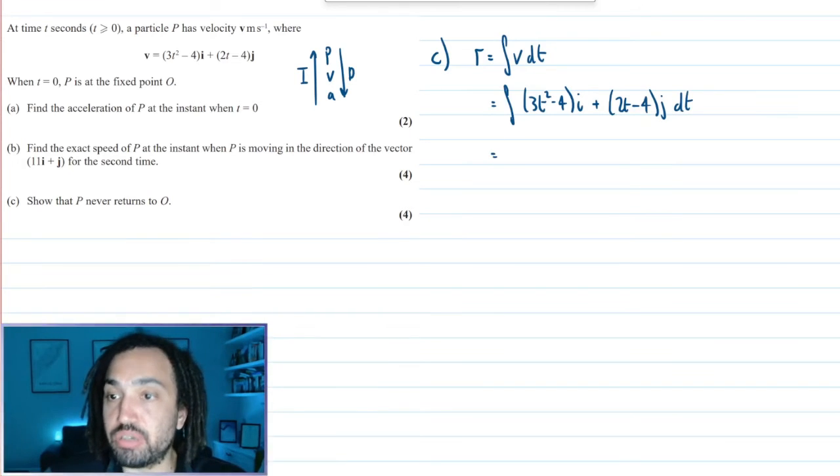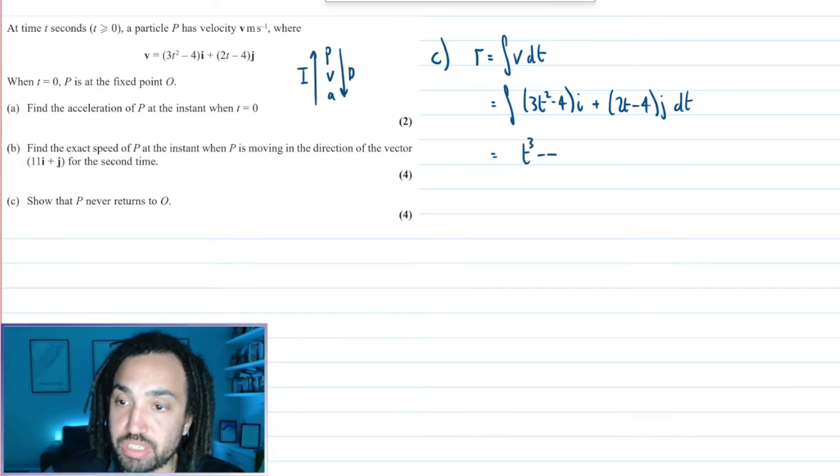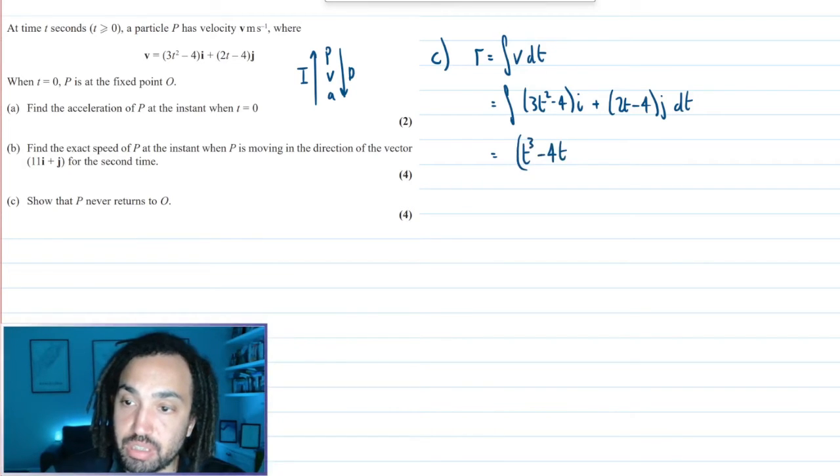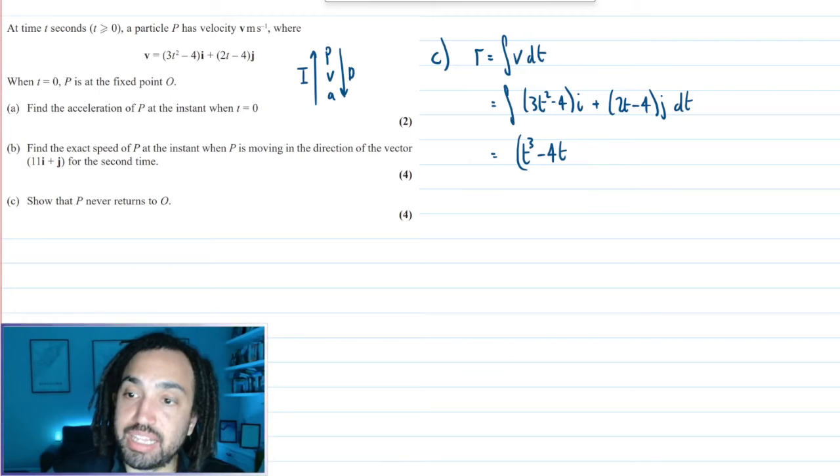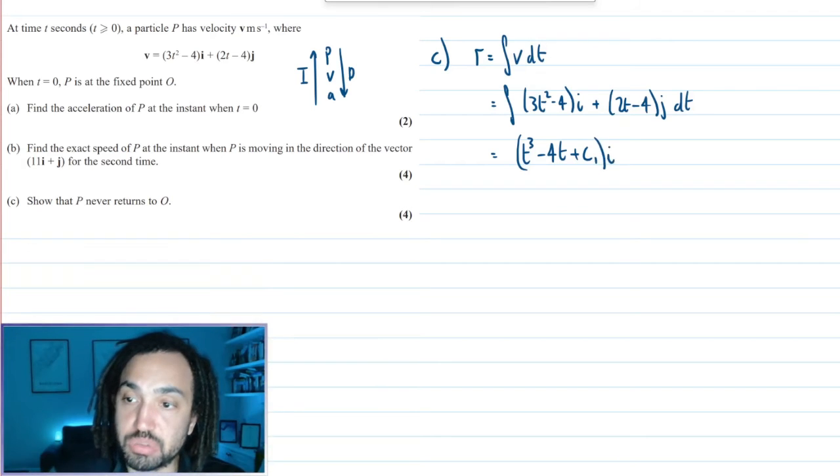So I will integrate 3t squared minus 4i plus 2t minus 4j. In doing so, I'll integrate the i separately. That is going to give me t cubed minus 4ti.